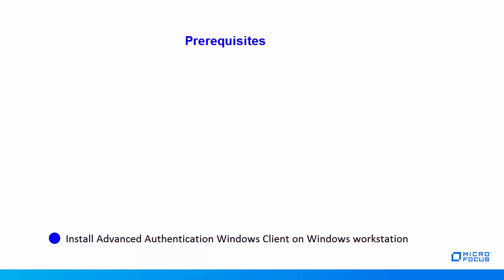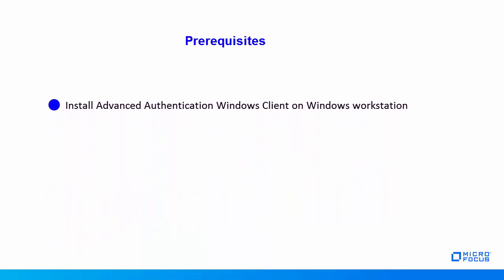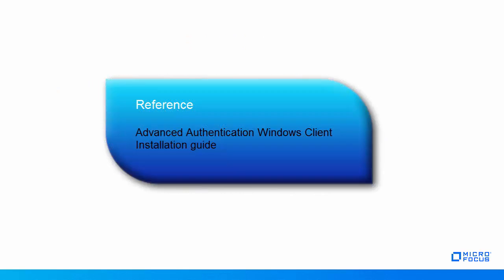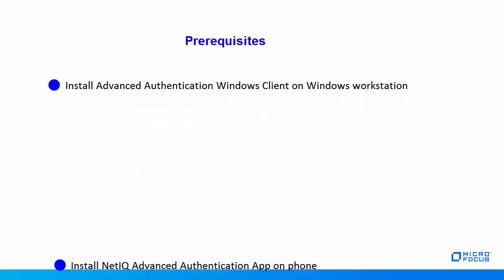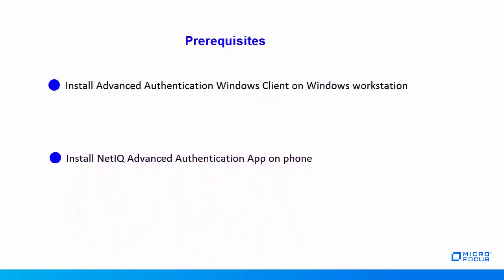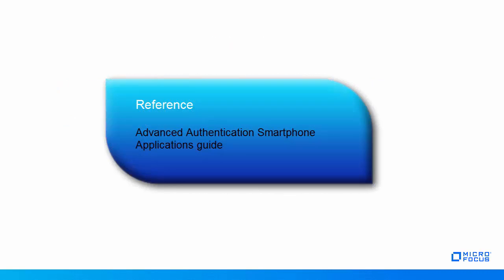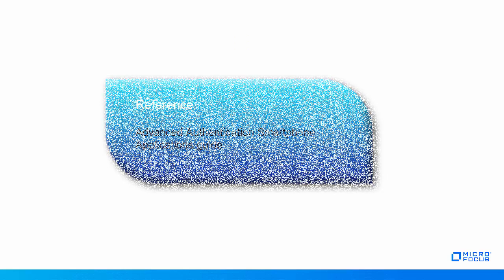Here are some key prerequisites before you begin the configuration. Install the Advanced Authentication Windows client on the Windows workstation — for more details, refer to the Windows Client Installation Guide. Also install the NetIQ Advanced Authentication app on the smartphone — for more details, refer to the Smartphone Applications Guide.